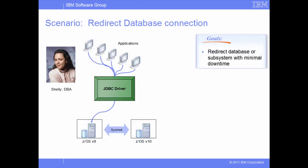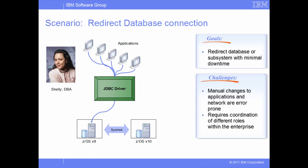In the following scenario, Shelly must redirect the data flow from one database or subsystem to another with minimal application downtime or disruptions. Such redirects can be performed, for example, when migrating the server from one version to another, when performing a manual switchover to a higher capacity server, or when one of the servers is down. In this example, Shelly wants to redirect from a subsystem running on DB2 for ZOS version 9 to a subsystem on DB2 for ZOS version 10 with replicated data. She faces the following challenges: first, the process of manually changing database location connection properties of each client is error-prone. Second, changes to the database location connection properties are not dynamically effective and require coordination between many roles across the enterprise.